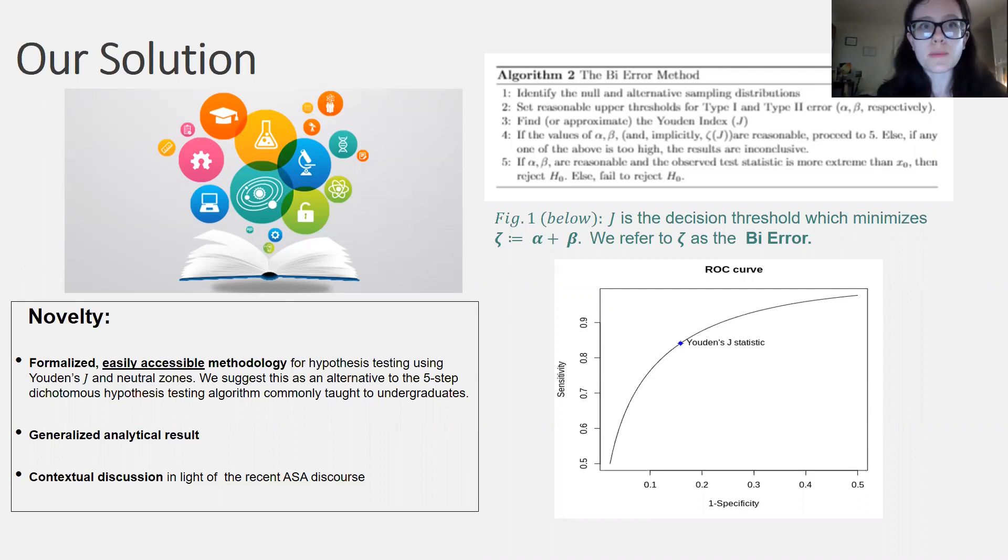The first two steps are pretty self-explanatory. They involve determining the null and alternative hypotheses and thresholding the type 1 and type 2 errors, respectively. Note that no default thresholds, such as 0.05, are supplied. The point is that the researcher needs to choose thresholds which are reasonable in the context of the study.